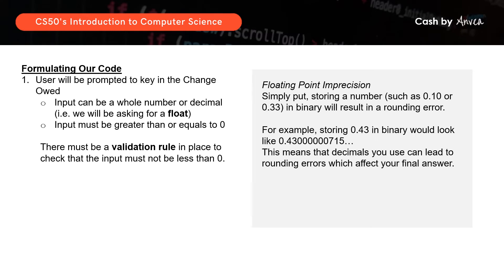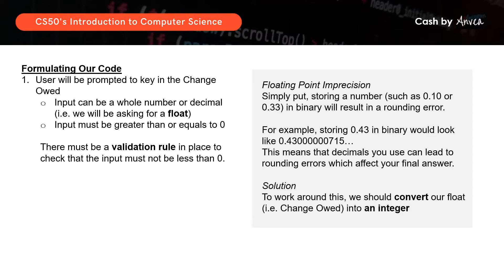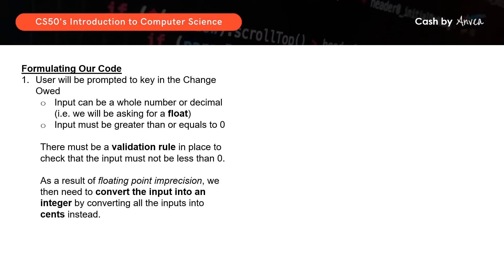So in C, when we key in a decimal such as 0.43, you will never get the exact number 0.43. Instead, you will get something like 0.43000715. So this can and would eventually affect your calculation somewhere down the line because of all the possible decimal numbers at the back. So to work around this, whenever we key in a float, we should convert it into an integer. For this case, we will actually need to convert the amount of change owed into cents — so if the user keys in 0.41, we will convert this into 41 cents. So now let's put this into C.